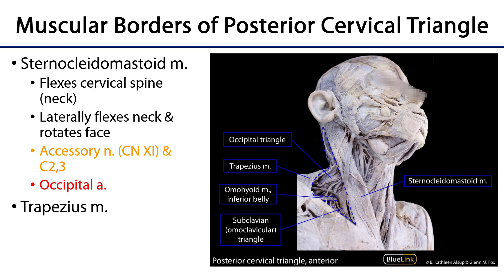The sternocleidomastoid muscle gets its name from its attachment points: the manubrium of the sternum, the medial third of the clavicle, and the mastoid process of the temporal bone. The SCM is a very thick strap that, when it contracts with its counterpart on the other side, flexes the cervical spine — think of drawing your chin down towards your chest, which is flexion of the c-spine.